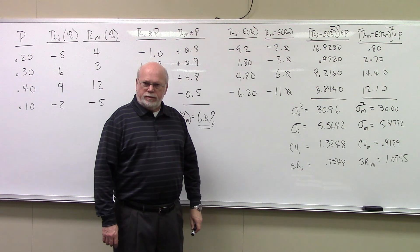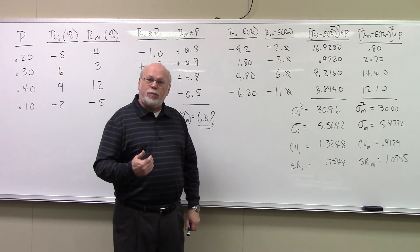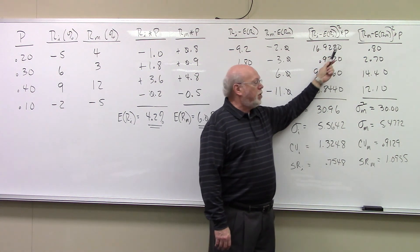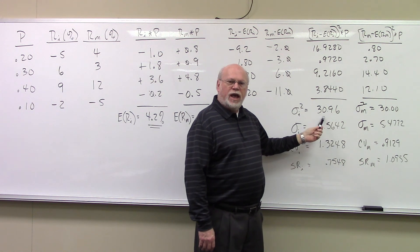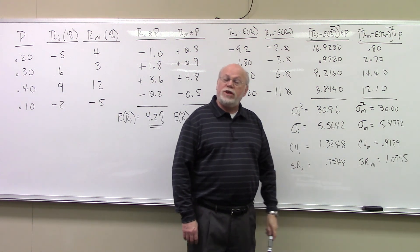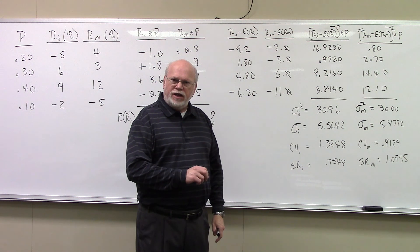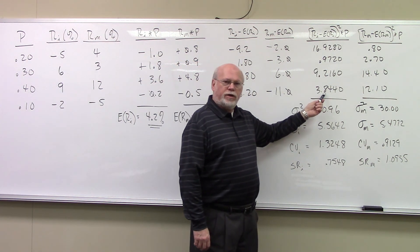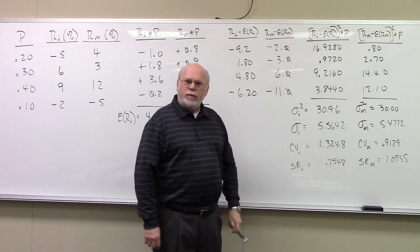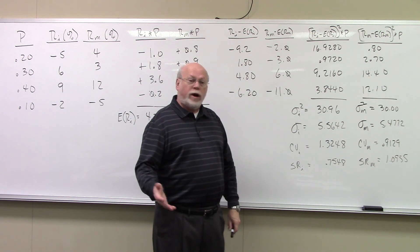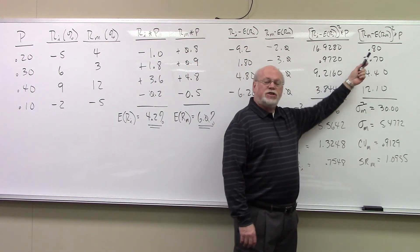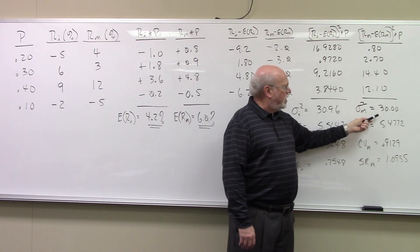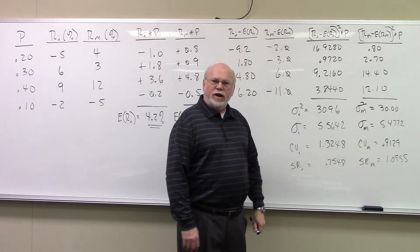Those are the products. To find the mean, you simply sum the products. We took the squared deviations, multiplied them by the probability, and sum these products — that gives us the variance, which is the mean of the squared deviations. For the security, summing these numbers gives a variance of 30.96. For the market, squaring the deviations and multiplying by their probability of occurrence, then summing those products, gives a market variance of 30.